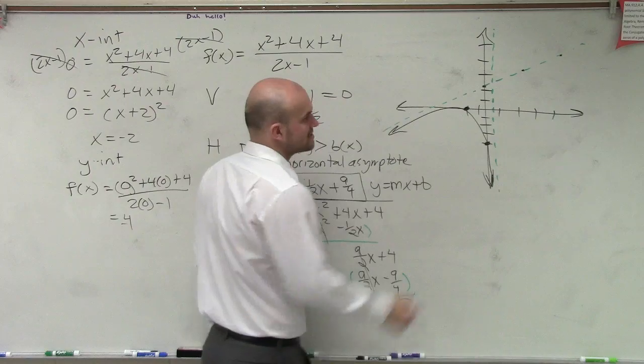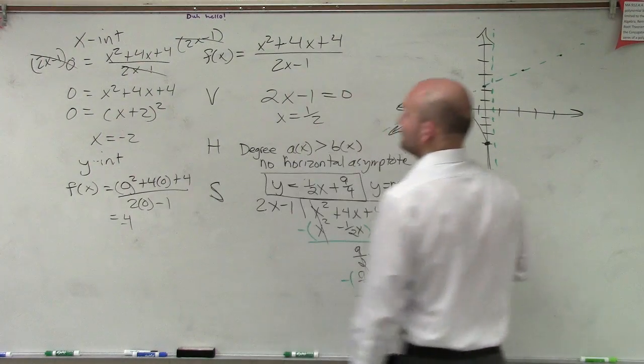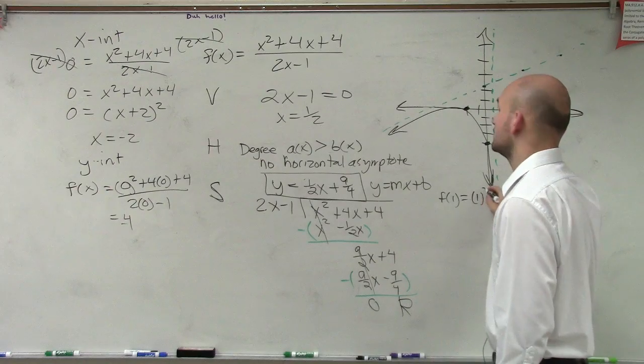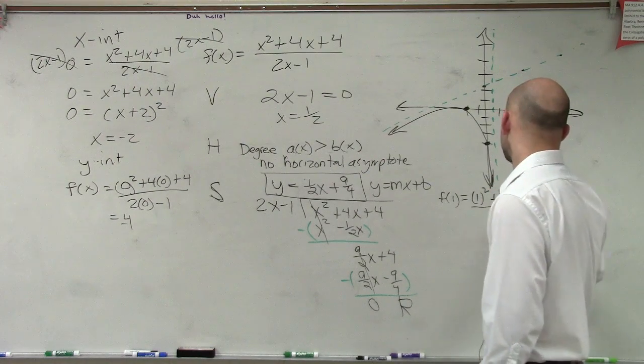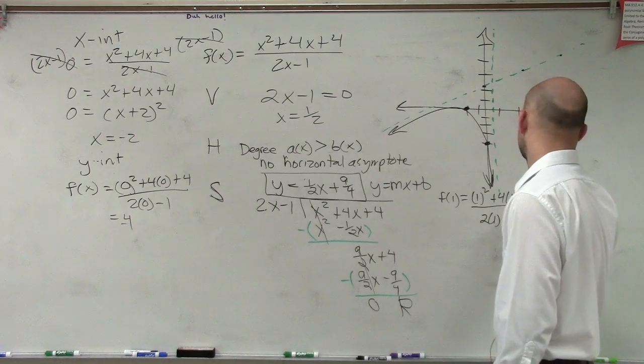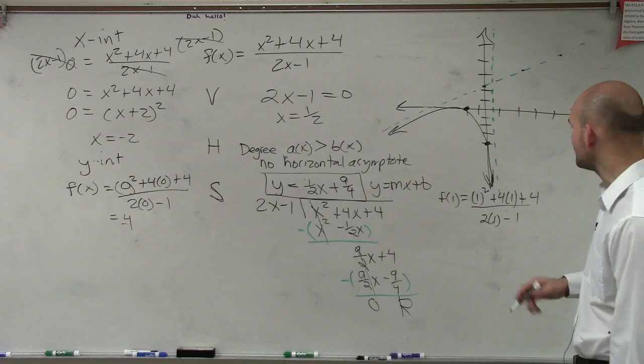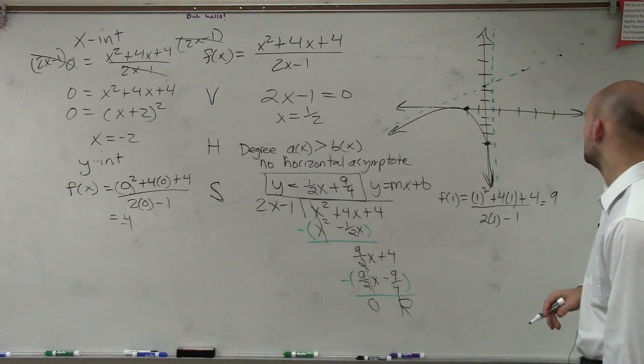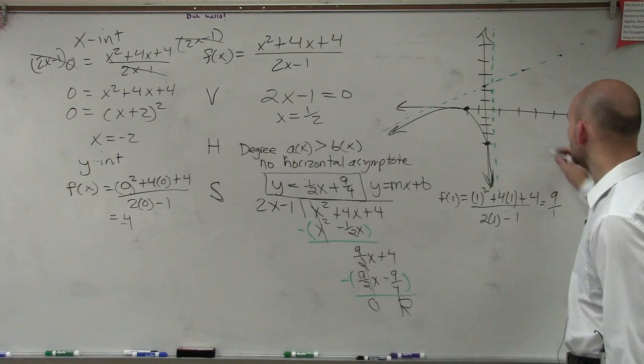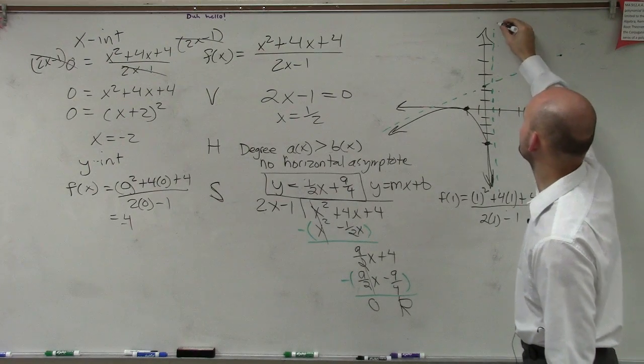Now, let's pick two points to the right. So let's do f of 1. So if I was to do f of 1, I do 1 squared plus 4 times 1 plus 4 divided by 2 times 1 minus 1. So we get 1 squared plus 4 is 5 plus 4 is 9. And then this becomes 2 times 1 is 2, 9 over 1. So at 1, I go up to 9, 1, 2, 3, 4, 5, 6, 7, 8, 9.